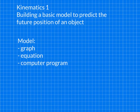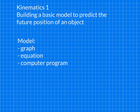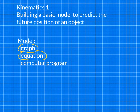Hi guys. This video is just the first of the kinematics series, which is going to explain how to build a basic model. The basic model we're building is going to try to predict the position of an object — in this case a little car — at some time in the future. A model is just a graph or an equation for our class, though it can also be a computer program. The model is like a machine that you put information into and it cranks out whatever you want — in this case, the position of the object.